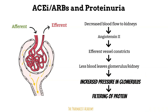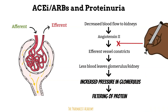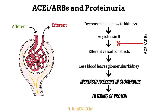When we give ACE inhibitors and ARBs, they inhibit angiotensin 2, which leads to vasodilation of the efferent arteriole. This allows blood to flow out, reducing the pressure within the glomerulus and also reversing the proteinuria. And that is why these medications are so essential in the healthcare system.